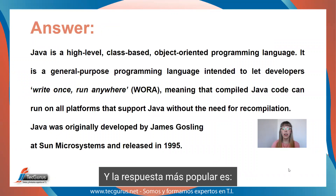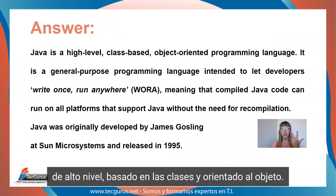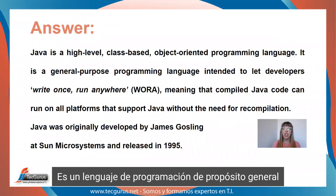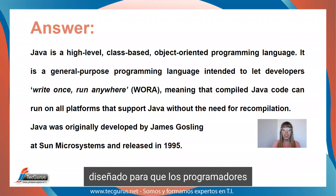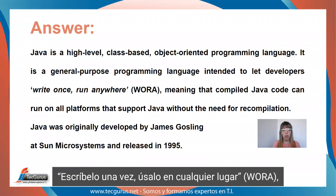And the most popular answer is: Java is a high-level, class-based, object-oriented programming language. It is a general-purpose programming language intended to let developers write once, run anywhere,